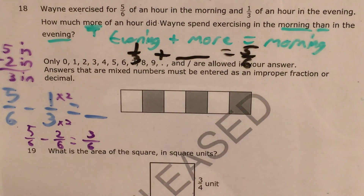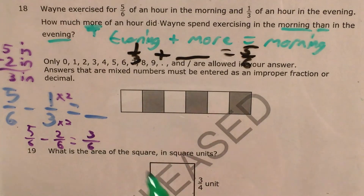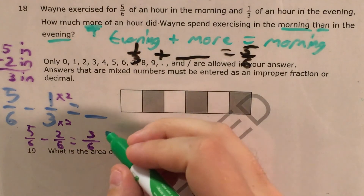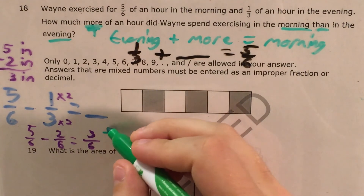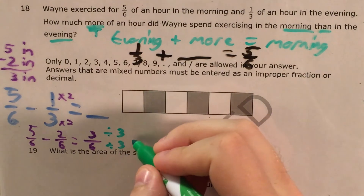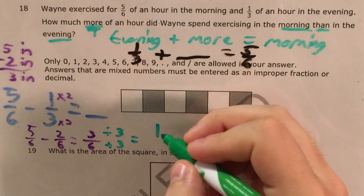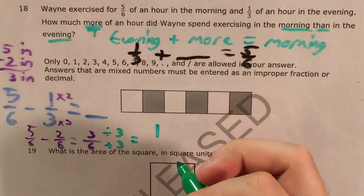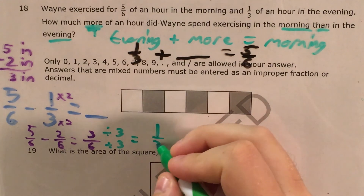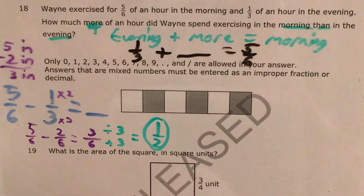So we end up with three-sixths. Now all I have to do is simplify. I need to find a number that goes into both three and six — and that number is three. So I divide both by three: three divided by three equals one, six divided by three equals two. My answer is one-half.